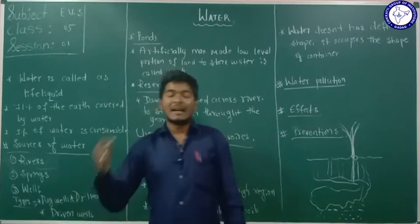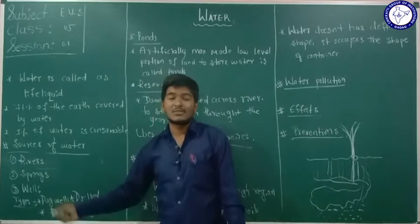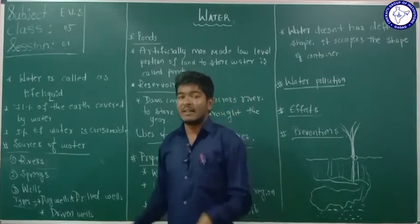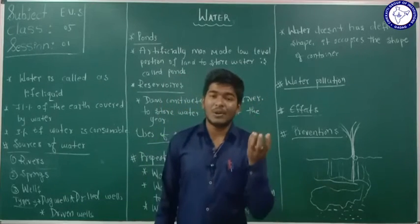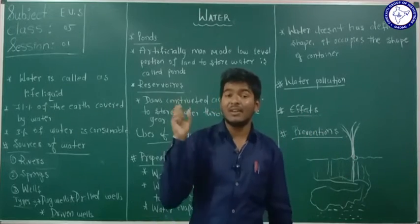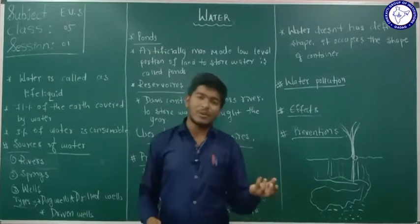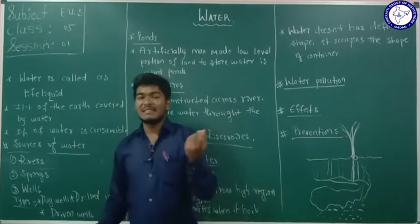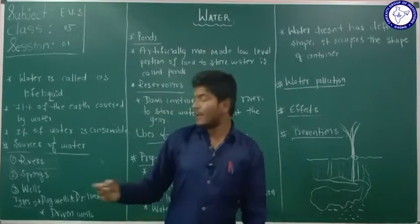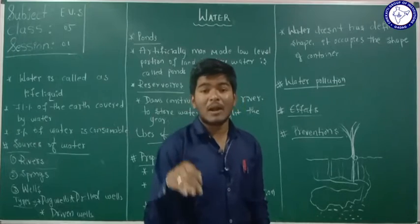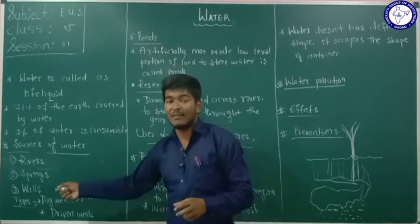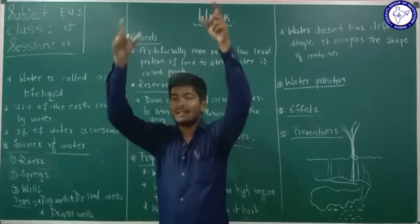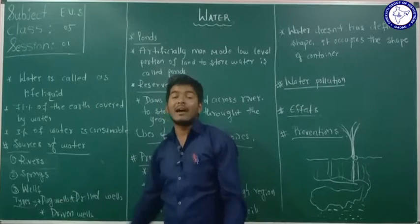The third source is wells, which are ancient sources our ancestors used in India. We get water from wells for drinking, bathing, and other uses. Today we also get water from bore wells. The earth is dug down to the water level, and that space is called a well.